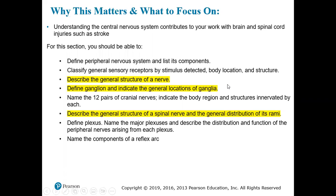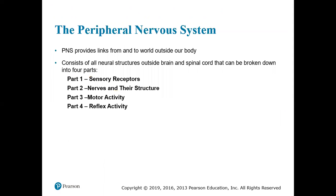We're going to be focusing on the general structure of a nerve. We're going to define ganglion and indicate the general locations of the ganglia, and we'll be describing the general structure of a spinal nerve and the general distribution of its rami.